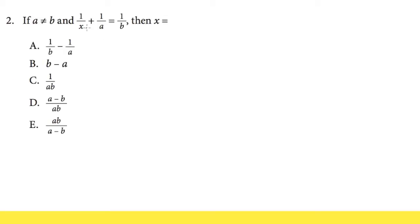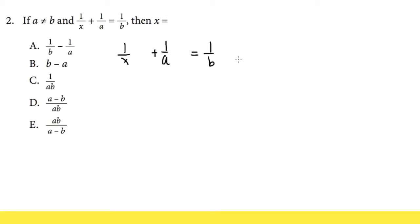Let me first write down this equation, but this time, let me write down 1 over x and leave a space, then put down a plus, then 1 over a, and leave a space, then put down the equal sign, and at the end write down the 1 over b with plenty of space. Now let's talk about what is the lowest common denominator for these fractions.